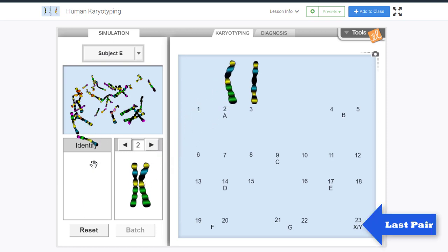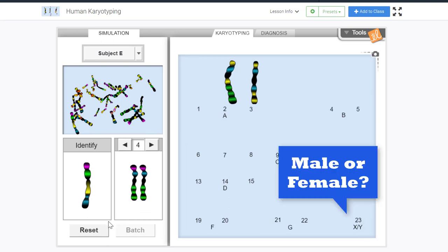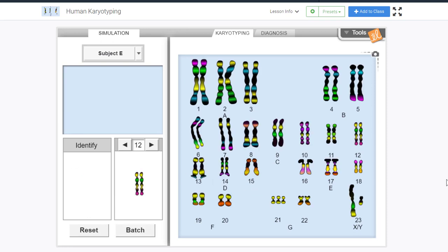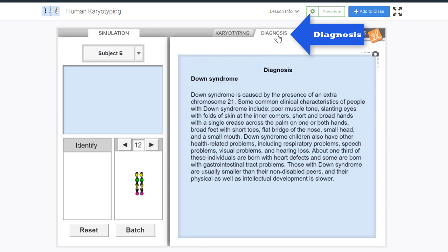The last chromosome will tell us if subject E is male or female based on genetics. Which do you think it will be? Once we have matched all of the chromosomes we can click on the diagnosis tab and discover if there are any diagnoses that need to be made.